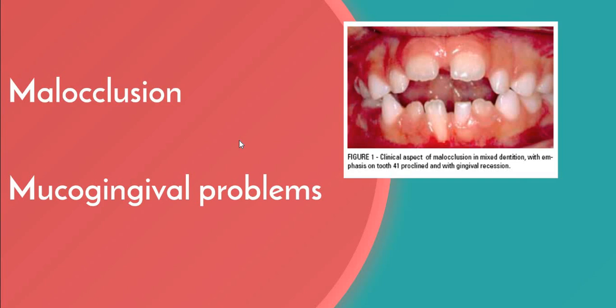In cases of mucogingival problems, the prevalence of mucogingival problems and gingival recession in childhood is from 1% to 19%, depending on the criteria used to assess the condition. Evidence suggests that some mucogingival problems may start in the primary dentition as a consequence of developmental aberration in eruption and deficiencies in the thickness of the periodontium. High frenal attachment may also be a factor in the development of mucogingival problems.